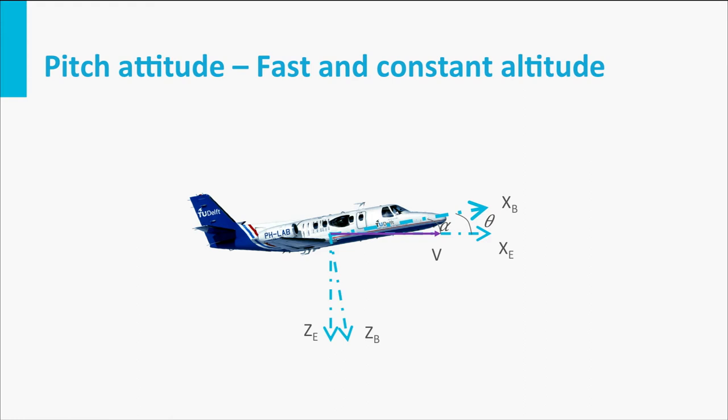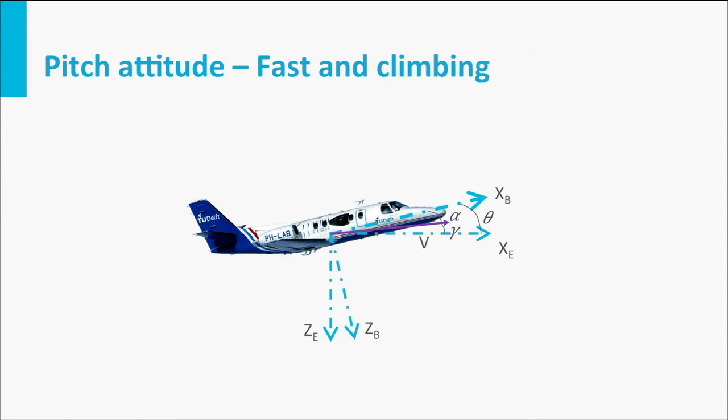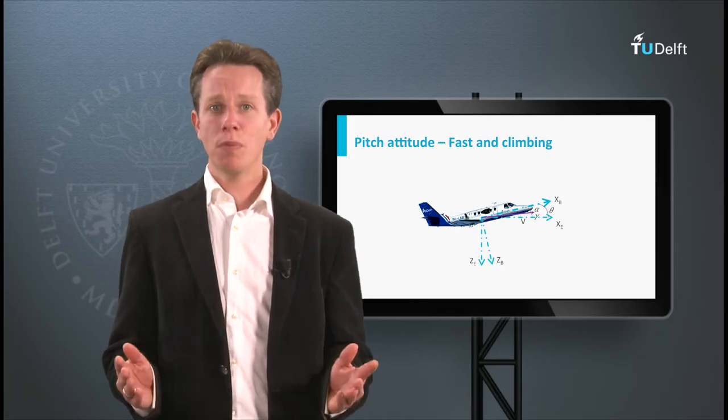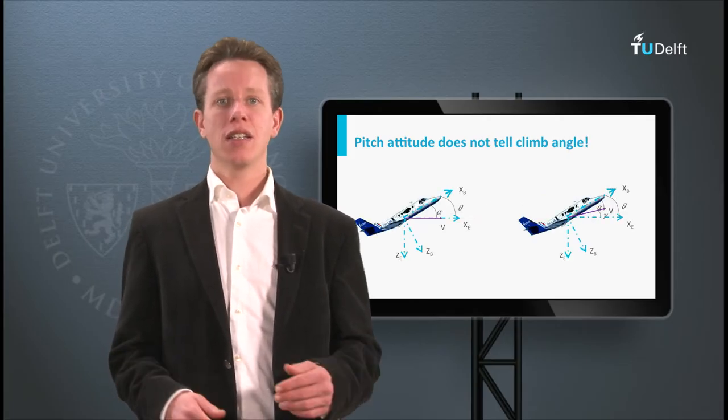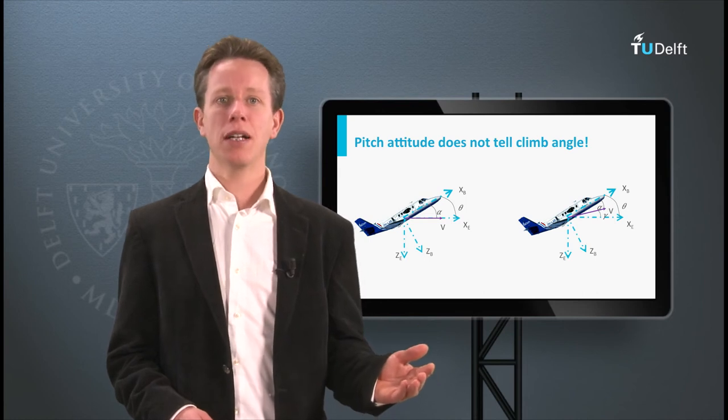If this aircraft would climb with a small angle, the pitch attitude is still small. So, in the high-speed climbing scenario, the pitch attitude is in fact smaller than the low-speed horizontal flight scenario, and the pitch attitude is what the pilot observes.